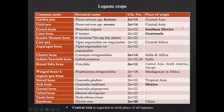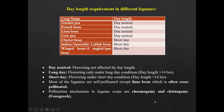Most of the legume crops originated from Central Asia or Africa. Except French bean and lima bean, which originated from Southern Mexico and Guatemala respectively. Jack bean is from Mexico and soybean from China. Regarding day length requirement: garden pea, French bean, lima bean and cowpea are day-neutral plants. Cluster bean, Indian bean and winged bean are short-day plants.